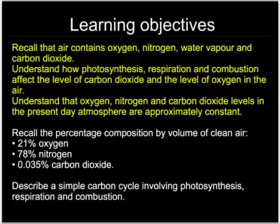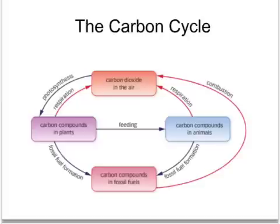We also need to understand how human influences are having an effect on the present day atmosphere. This carbon cycle describes how the percentage of carbon dioxide in the air has remained almost constant for the last few million years. Carbon dioxide can be put into the air by respiration — a process where carbon compounds in animals or plants convert to carbon dioxide.